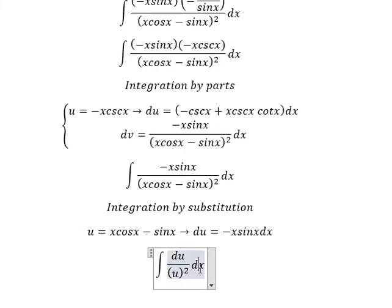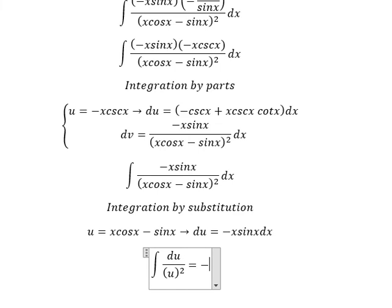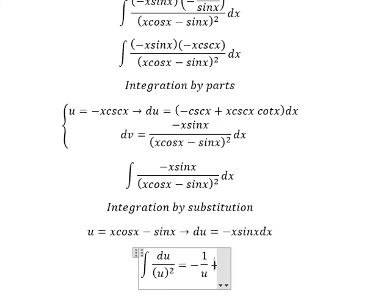The integration of this gives us negative 1 over u, and we add the constant c.